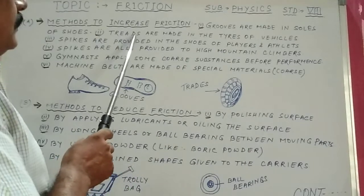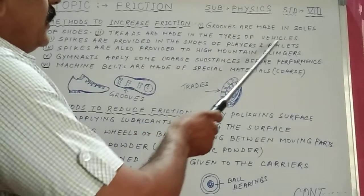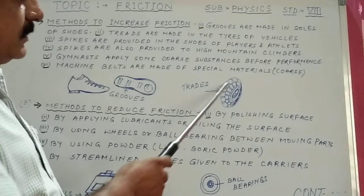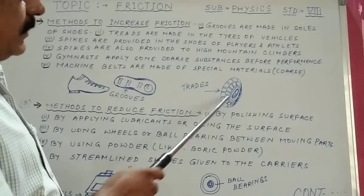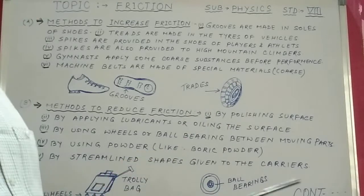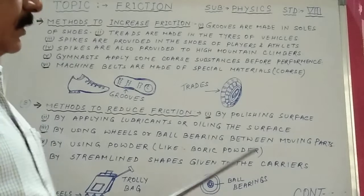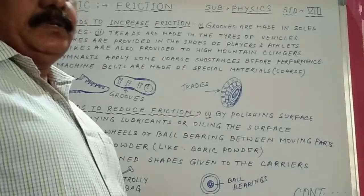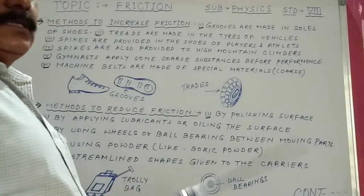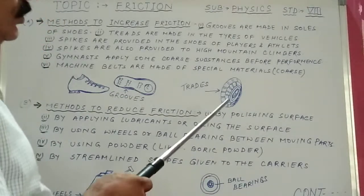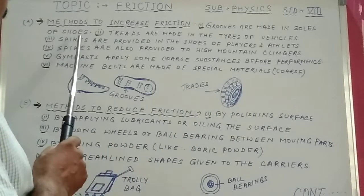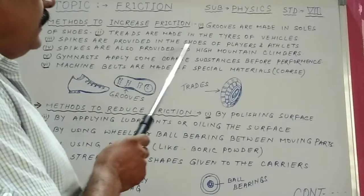Point two: treads are made in the tires of vehicles. In the tires of vehicles you can see special treads are made so that the tire cannot skip on the road, protecting from skidding and increasing friction.